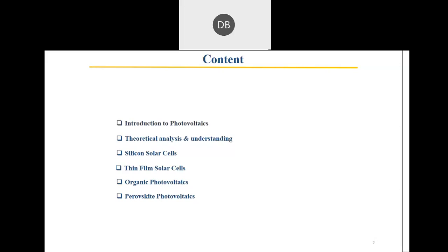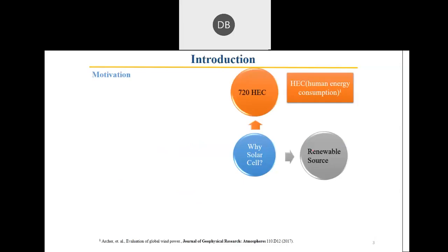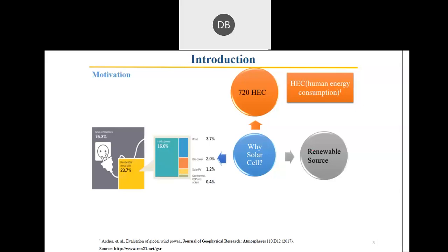Everyone wants to know about perovskite photovoltaics or thin film solar cells. The basic reason we need solar cells is that it is a renewable source of energy. The sun provides around 720 times the energy we need in terms of total human energy consumption, so we can utilize it for all the consumption required worldwide. However, people are still not widely using photovoltaics, and solar PV still represents a very small portion of energy use.